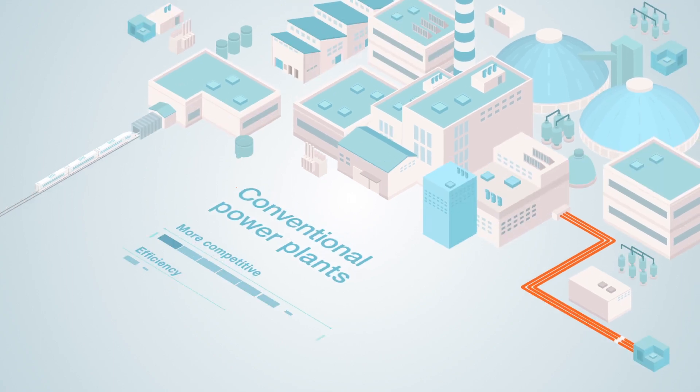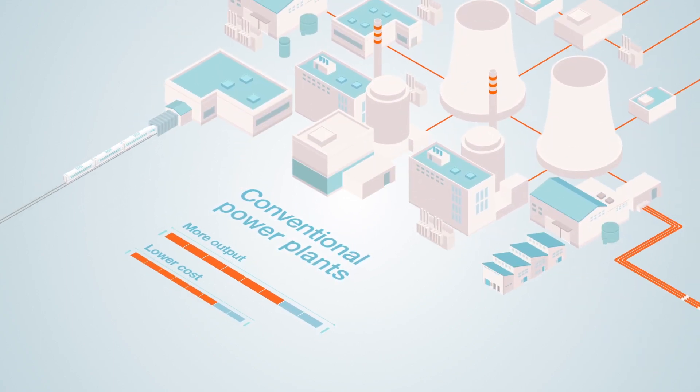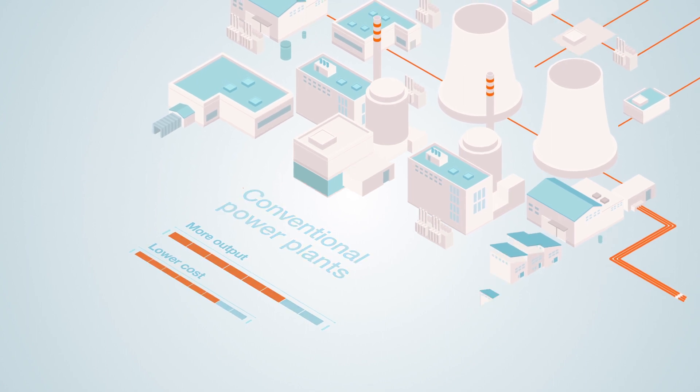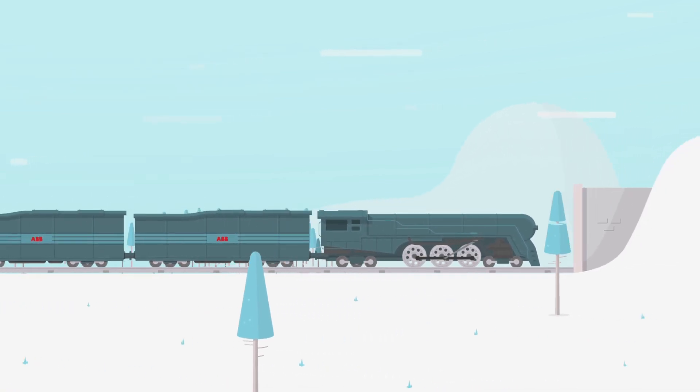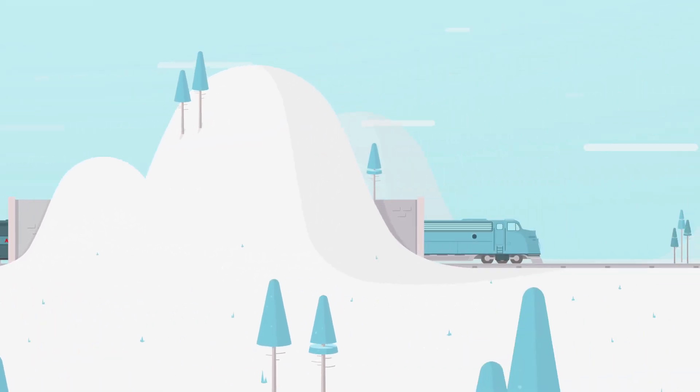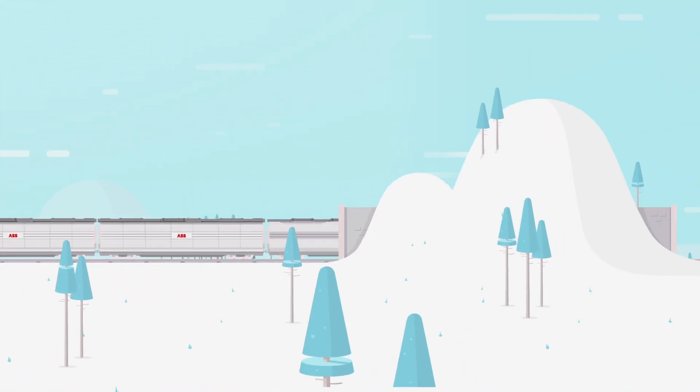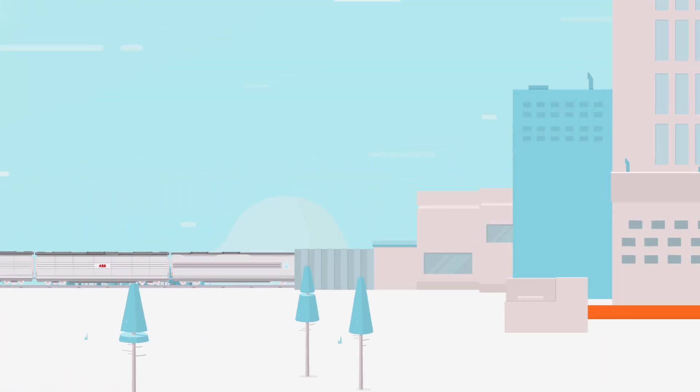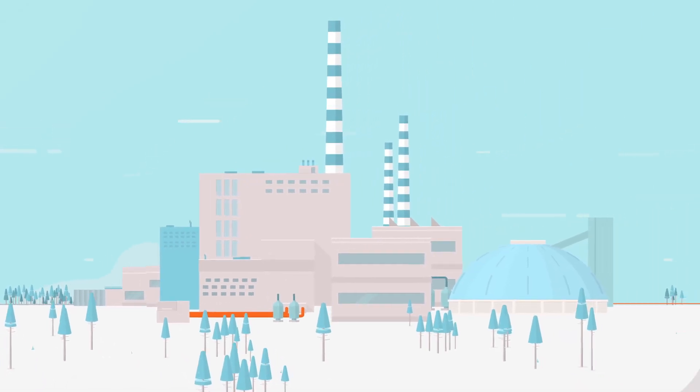At ABB, we understand the demand on conventional power plants to become more competitive, to be more efficient and provide more output at lower cost. With over a century of power generation experience and an extensive portfolio of products and systems, ABB is there to help improve your plant's reliability and availability, optimize its efficiency and performance, and minimize its environmental impact.